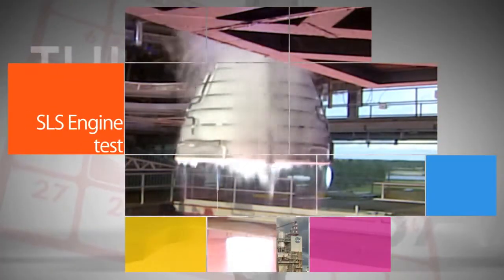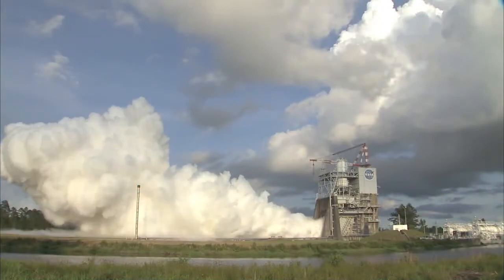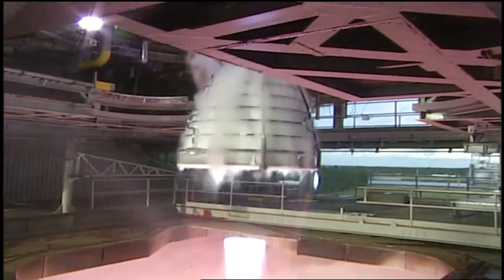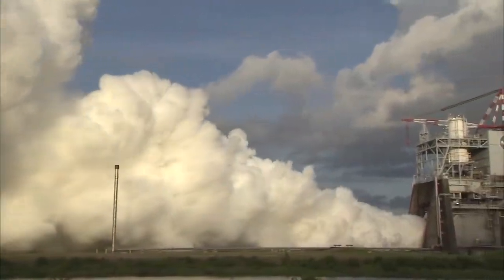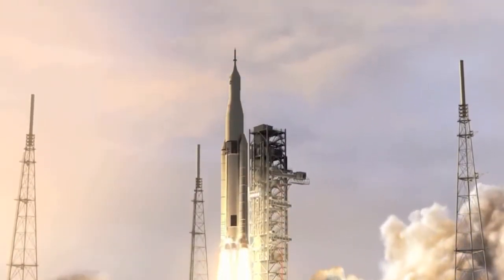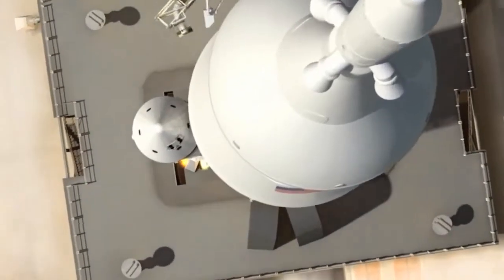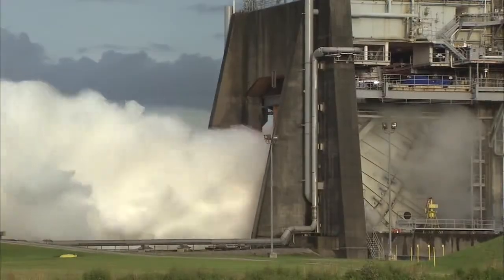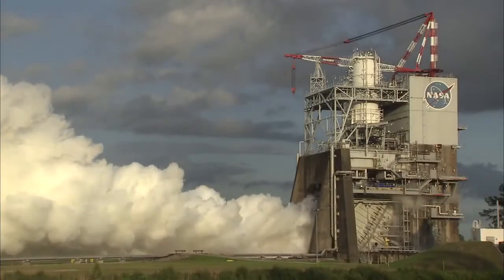Engineers at Stennis Space Center conducted a 450-second test of an RS-25 engine on the A-1 test stand. Four RS-25 engines will power the Space Launch System rocket. This was the second in the current series of test firings to investigate how the RS-25 stands up to the rigors and specific requirements needed to boost the massive SLS core stage. Six more tests are planned for the current cycle of development.